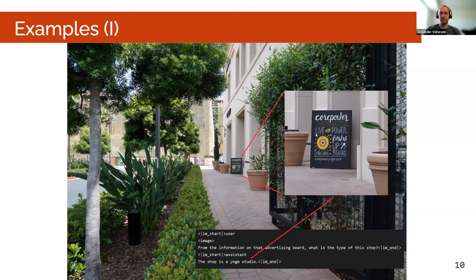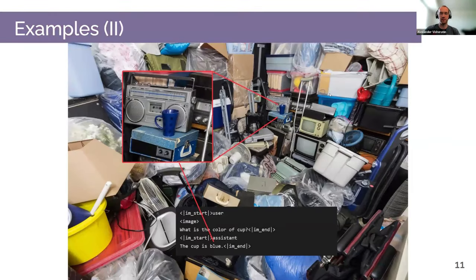I also did an ablation study: I removed everything related to the shop from the image and the model could not predict what kind of shop it was — so it's definitely reading the sign. Another example: given a very cluttered room, asked about the color of a cup, the model finds that specific cup and answers that it's blue. When I remove the cup from the image, it answers white — probably because there are many white objects. These latest results motivate me that the model is quite good.